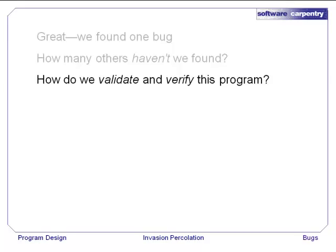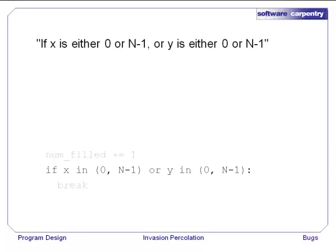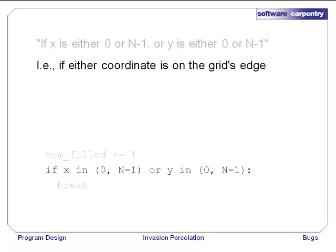Before we go on, let's look at one line of the program that people often get wrong. The line of code is, if x in 0, n minus 1, or y in 0, n minus 1, then break. This tests to see if x is either the value 0 or the value n minus 1, or y is the value 0 or n minus 1, i.e. is either coordinate on the grid's edge.